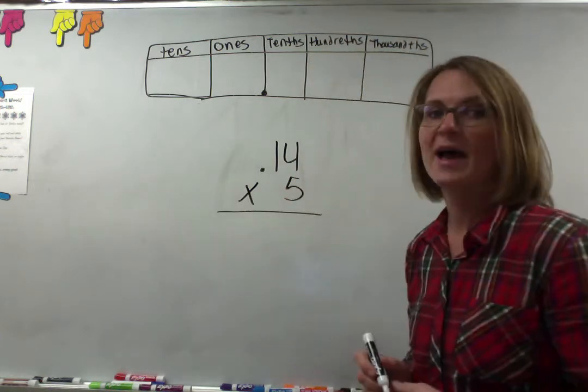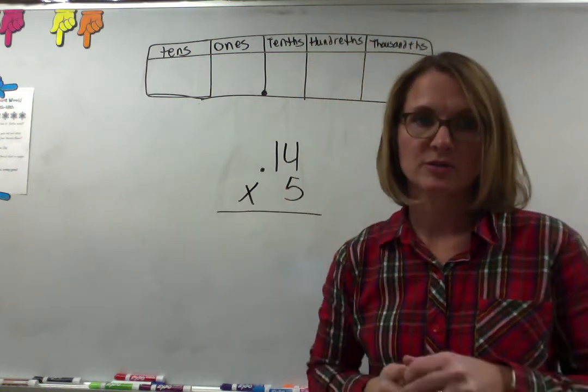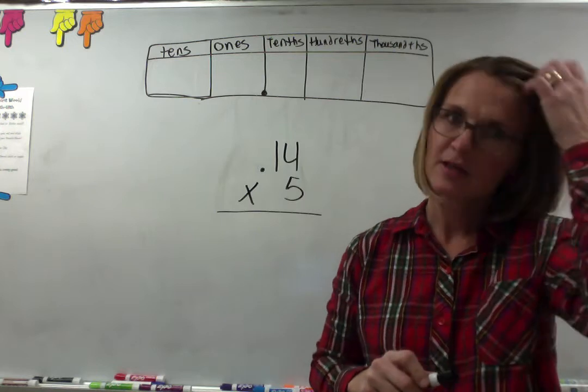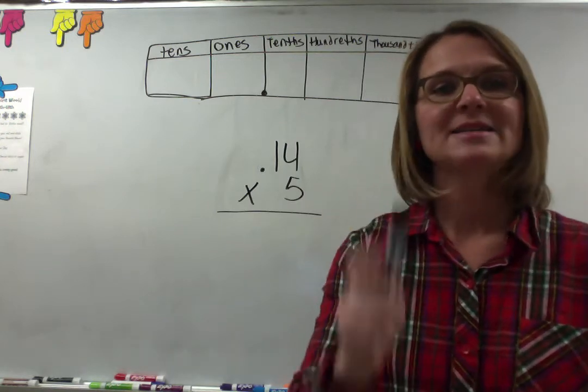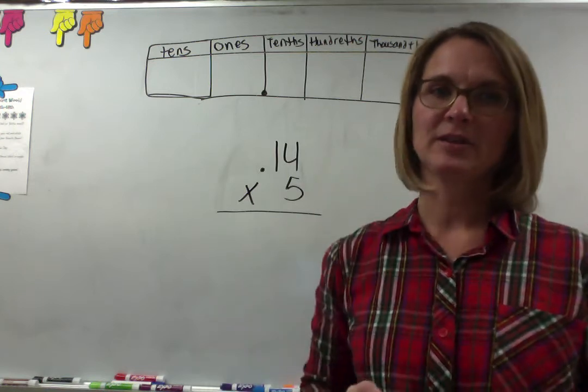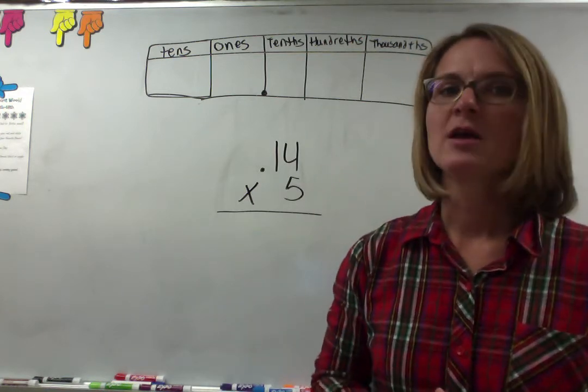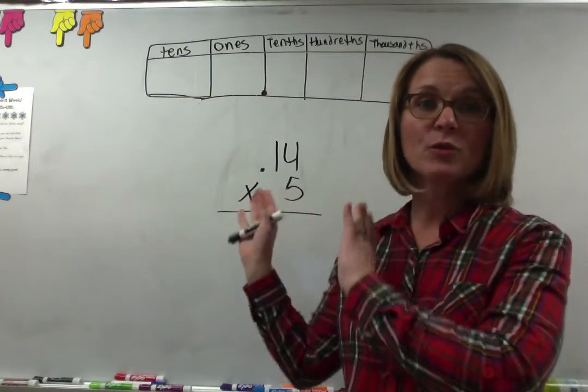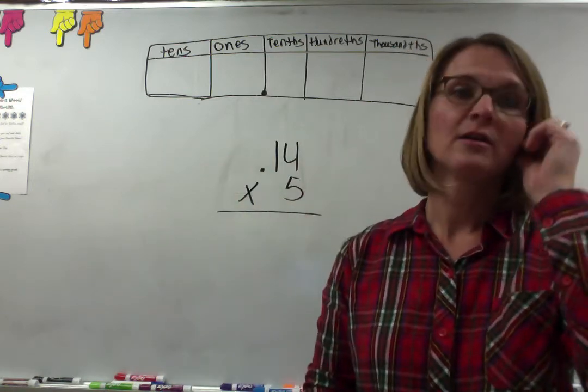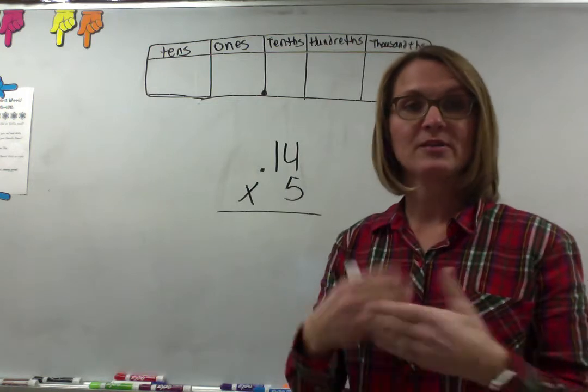When you're adding and subtracting decimals you have to line up your decimals. However, when you are multiplying decimals you do not have to line up the decimals. Very important distinction to know because you're going to basically ignore the decimal until you get your answer.